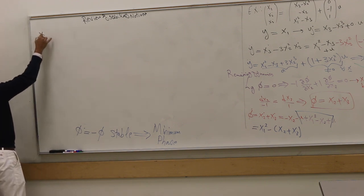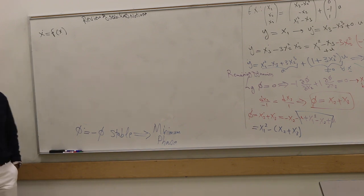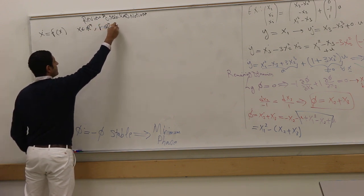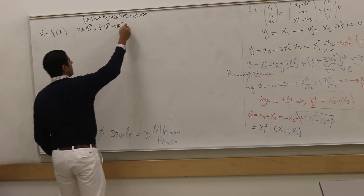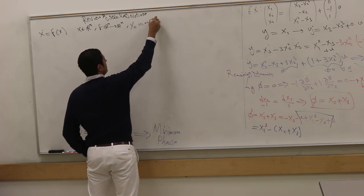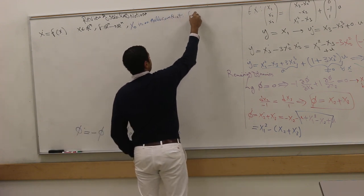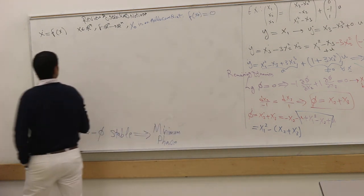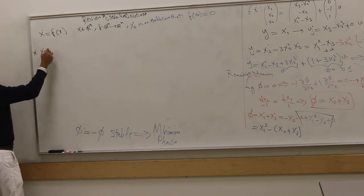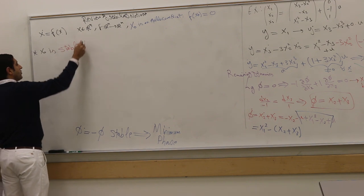We have a system like x dot equals f of x, there is no input now. I will remove all this underline for an array, because everything is an array actually. x is in R^n, and f is mapped from R^n to R^n. I have an equilibrium point. x̄ is an equilibrium point, means that f of x̄ is zero.